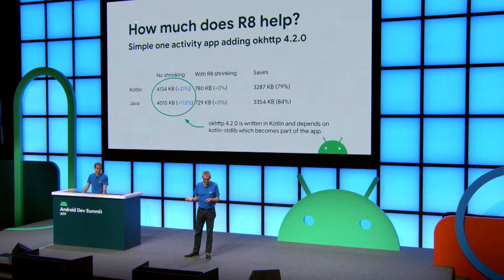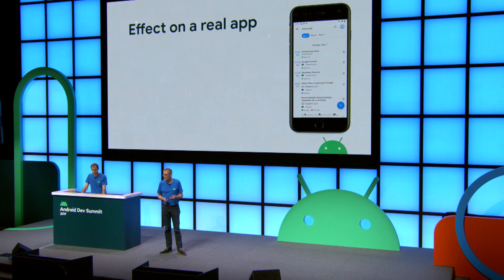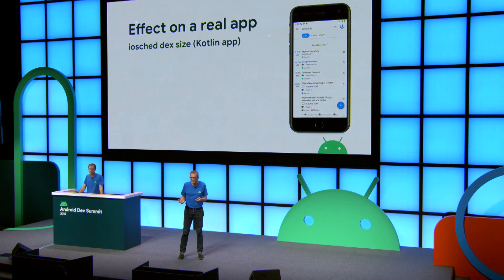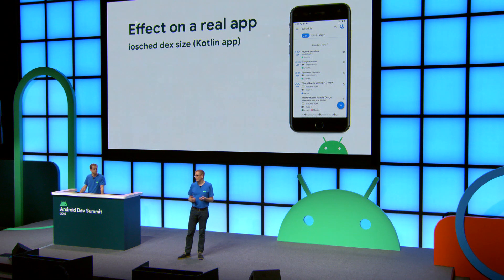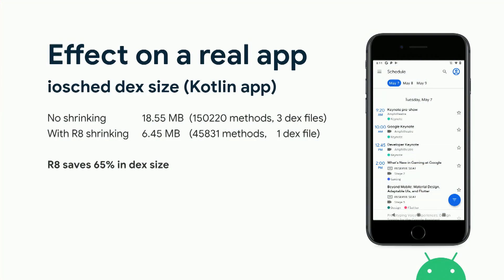After shrinking, the size is the same, because in this example I haven't actually used OKHttp in the code. You might say this is cheating to show numbers for an empty app. So to give you an idea from a real app, I took the Google I/O app from this year. R8 actually reduces the code to less than half. Looking at the number of methods and DEX files, you can see that shrinking the I/O app has a lot of other positive side effects.